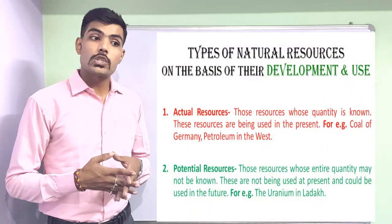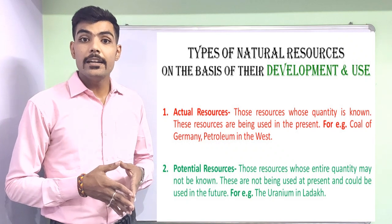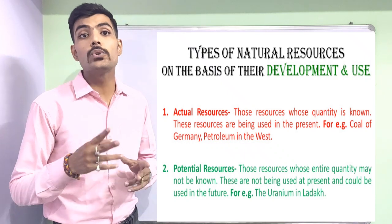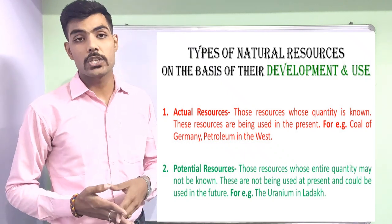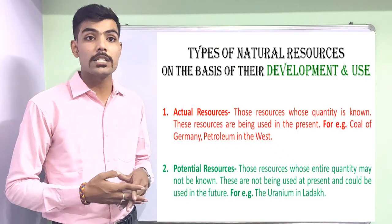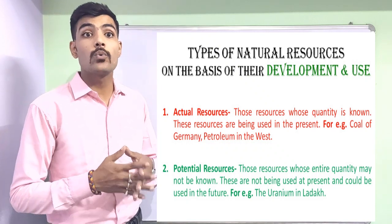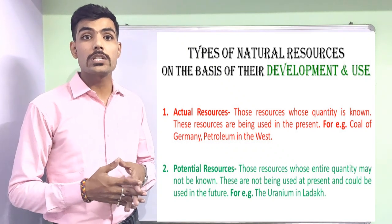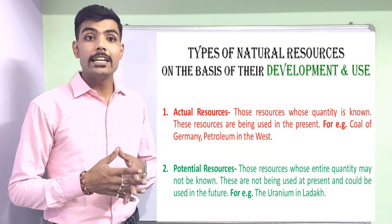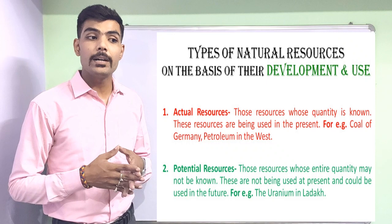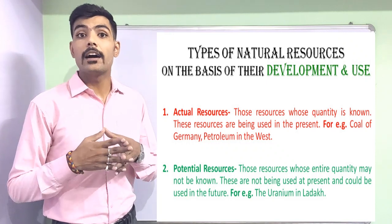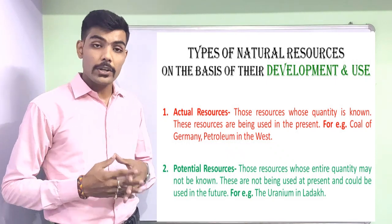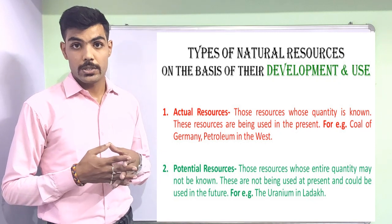When we talk about natural resources, they are further classified on the basis of development and use into two types: actual resources and potential resources. Actual resources are those whose quantity and quality is known and fixed. Whereas potential resources are those whose quality or quantity may not yet be known. For example, windmills in earlier days were a potential resource, but nowadays we are utilizing them, so they are an actual resource.